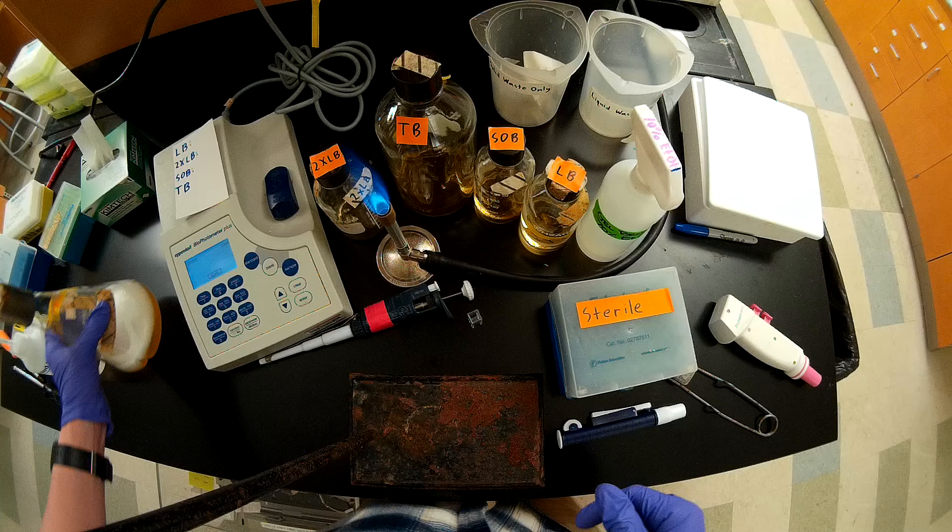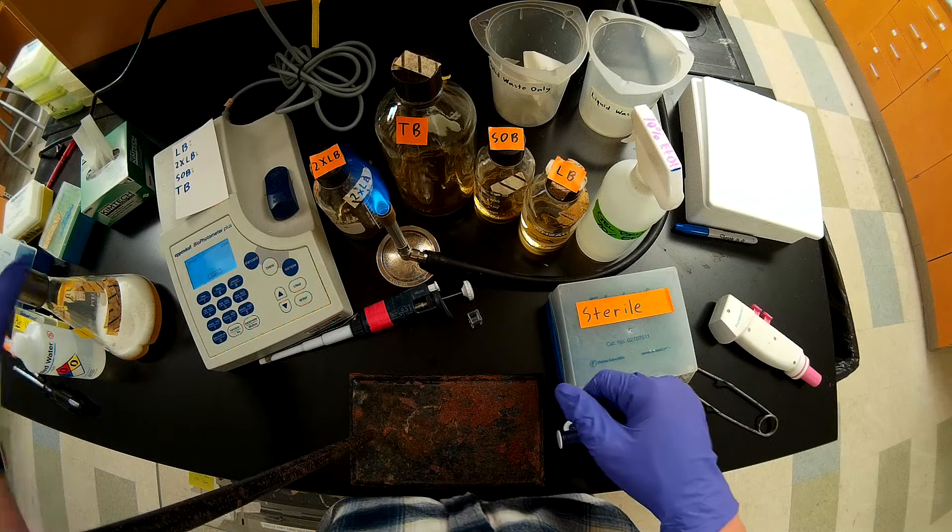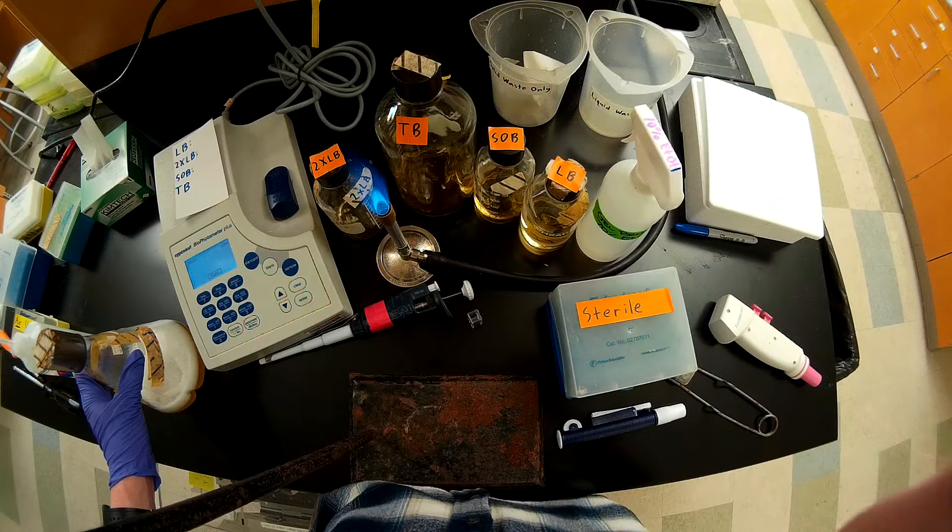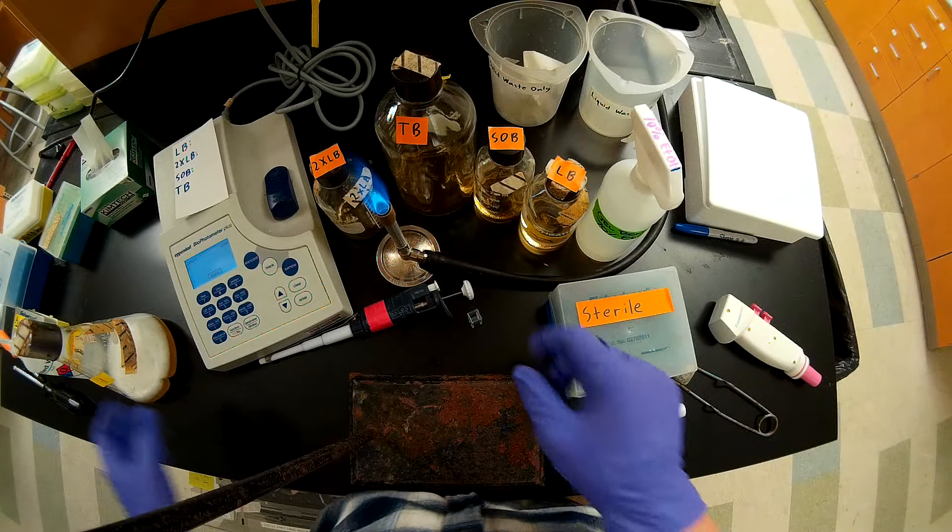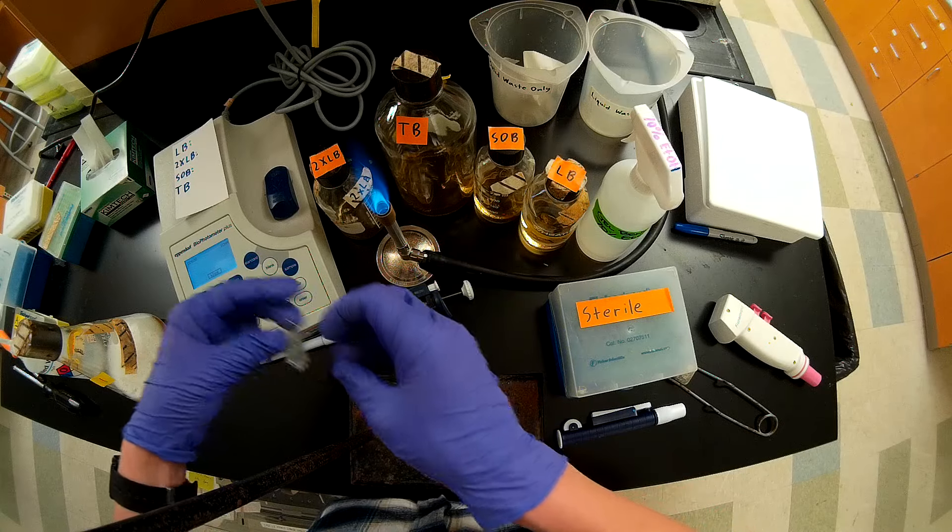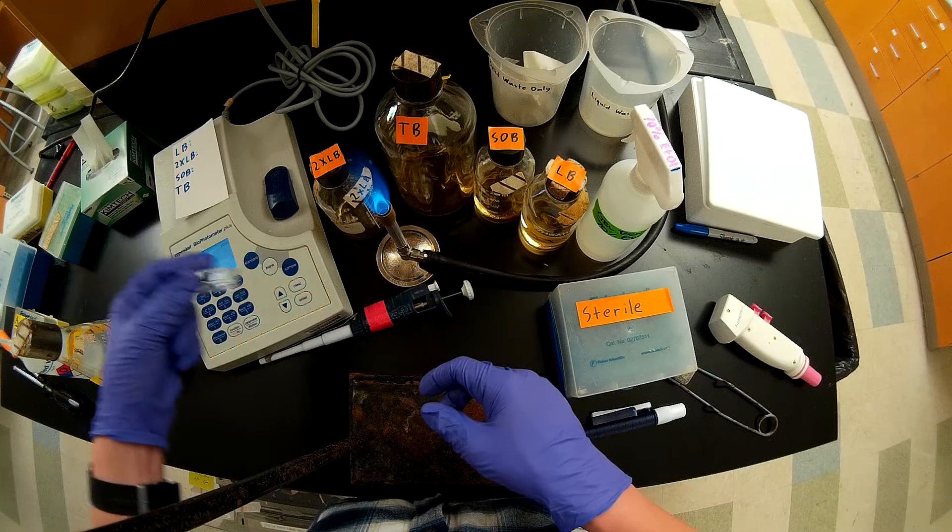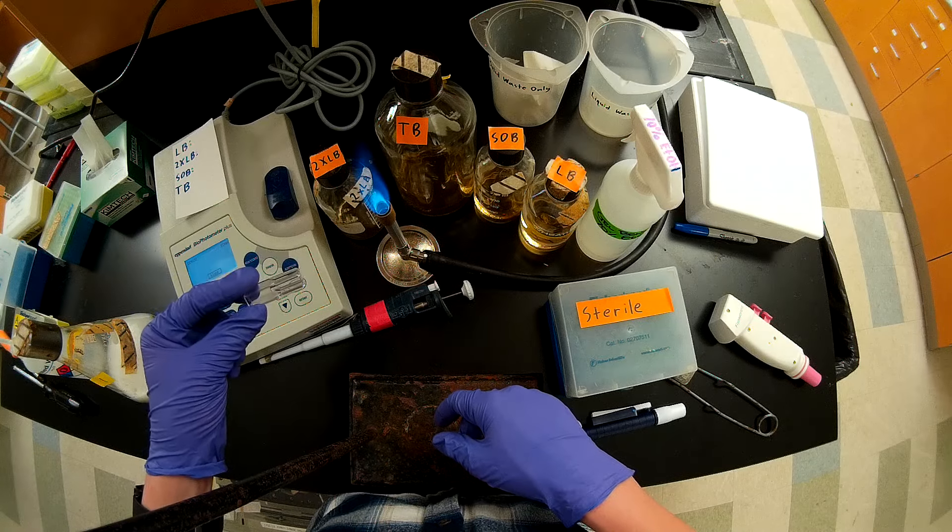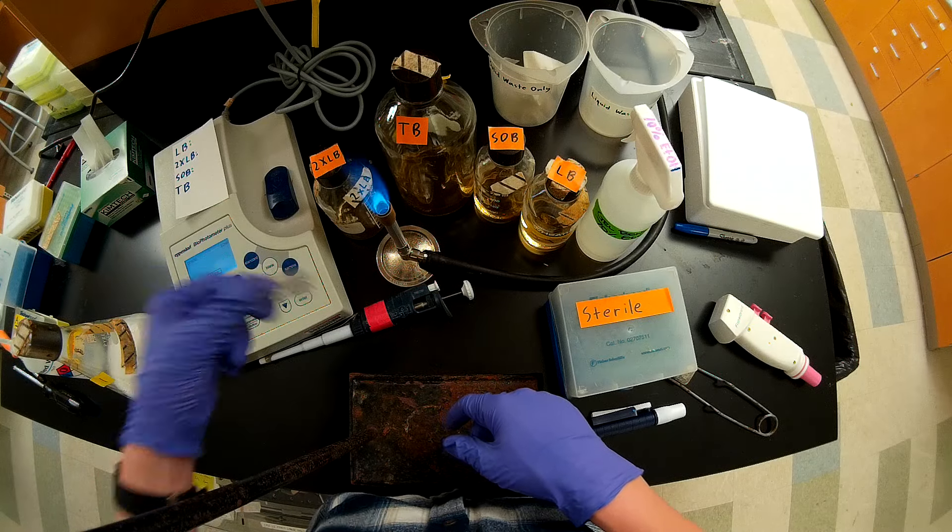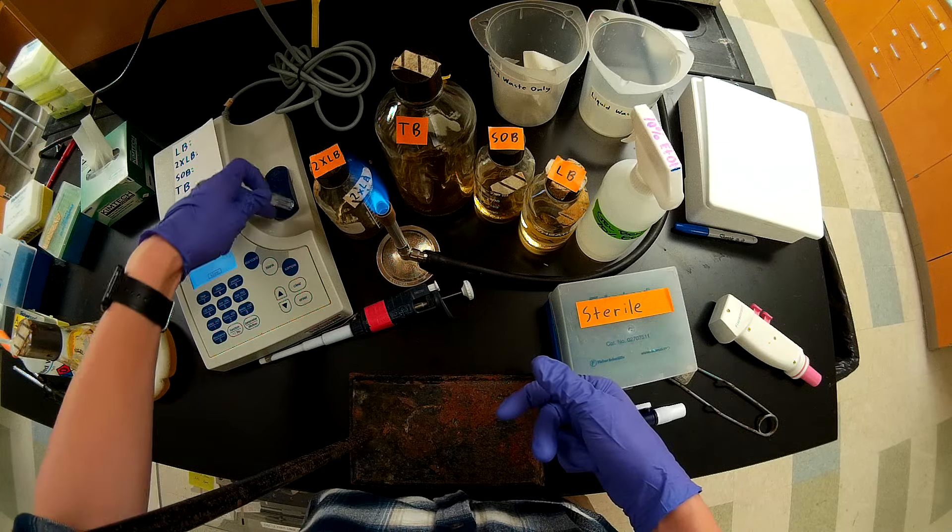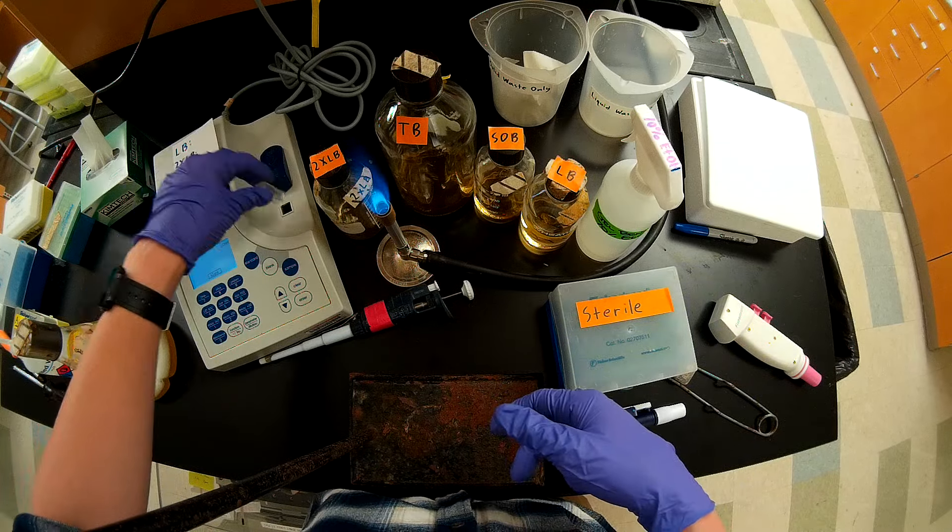I want to determine the OD600 of that. I would want to blank with the growth medium that these cells are growing in, and that's actually SOB. But generally it's fine to blank with water. I'm going to begin by answering a question that you will probably have at some point: What is the reproducibility in measurements between these cuvettes? Obviously they're disposable, but if you're taking multiple measurements in one set, do you want to reuse the same cuvette?